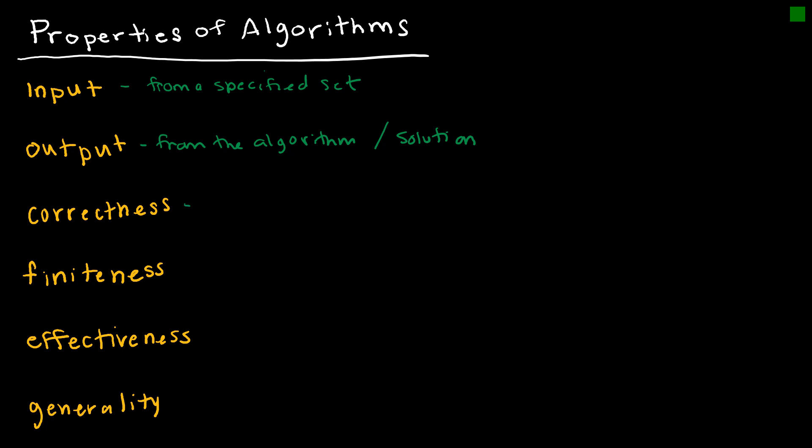Correctness. This one's kind of a given. The algorithm should produce a correct value or values from each input. So we want to make sure that whatever algorithm we create does what we want it to do.